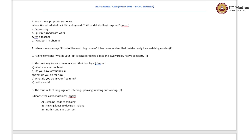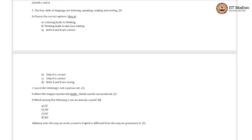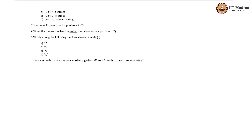The sixth question: choose the correct option. Two statements are given — Statement A: listening leads to thinking, and Statement B: thinking leads to decision making. Options are: A — both A and B are correct; B — only A is correct; C — only B is correct; D — both A and B are wrong. The right option is option A — both A and B are correct — because listening leads to thinking and thinking leads to decision making.